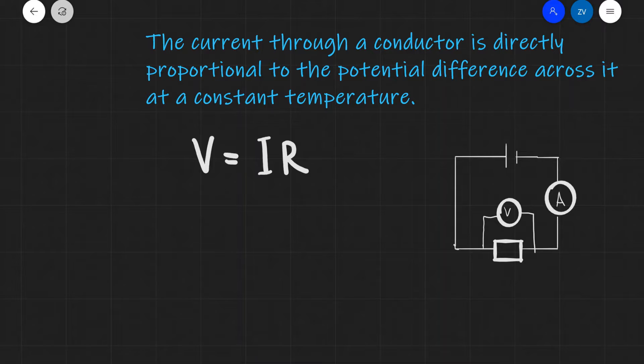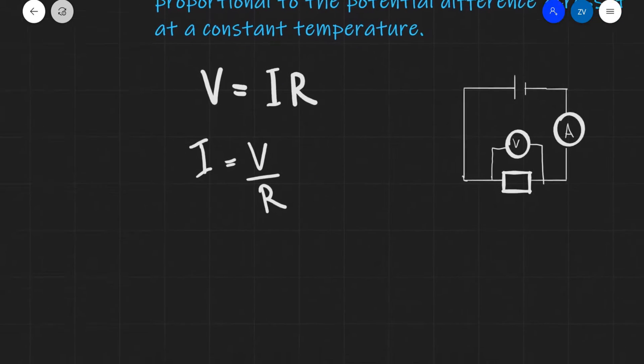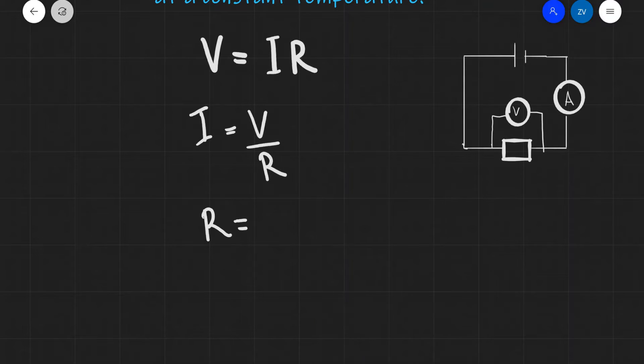We can also easily rearrange this equation for the current. The current I will be equal to V divided by R, and additionally the resistance R will be equal to V divided by I. In fact, we can define our resistance to be equal to the potential difference across a component divided by the current that is going through it.